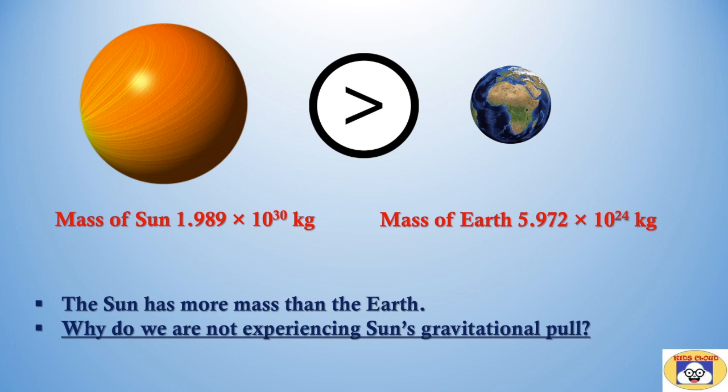Now the mass of sun is 1.989 times 10 to the power 30 kg, while mass of earth is 5.972 times 10 to the power 24 kg. The sun has more mass than the earth, so why are we not experiencing sun's gravitational pull?